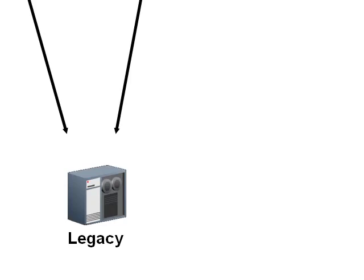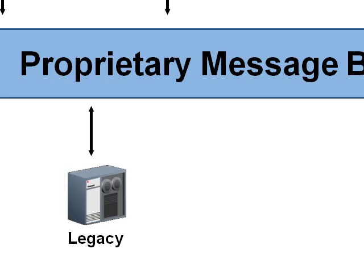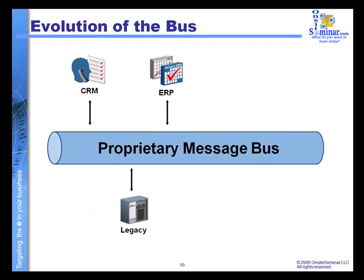What we needed to do was manage the routing of requests between these different application systems. So what was basically being deployed back in the early 90s was this concept of a message bus. The message buses were proprietary, so different vendors were coming up with their own proprietary messaging environments — IBM had their MQ Series, Microsoft had its MSMQ, and a variety of other vendors were out there.